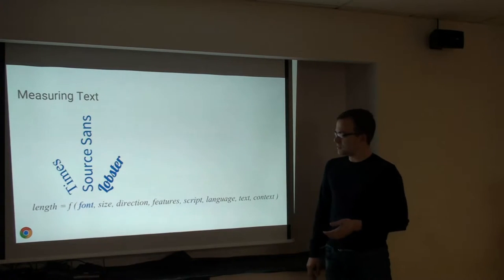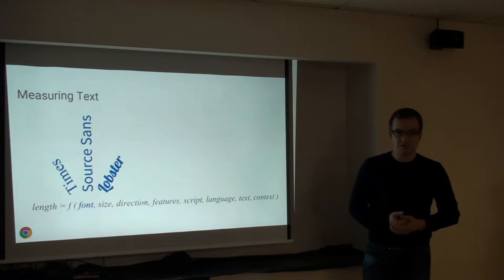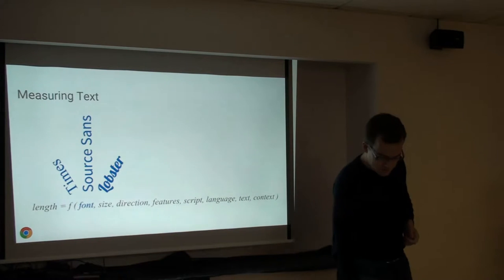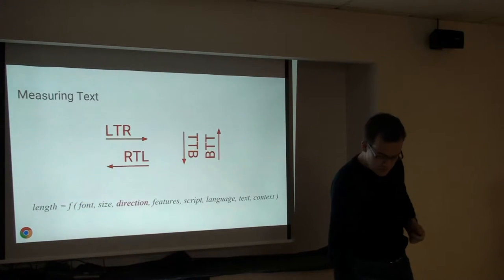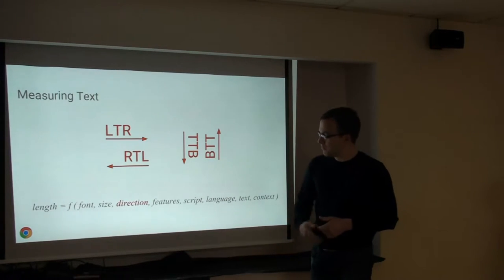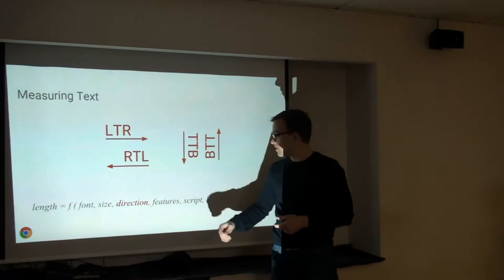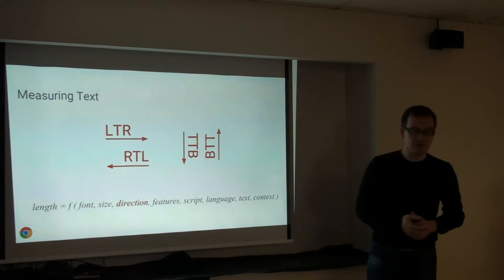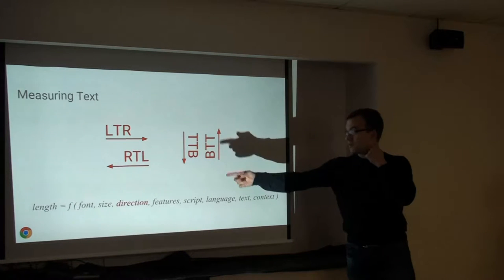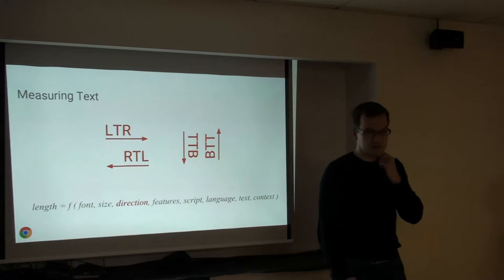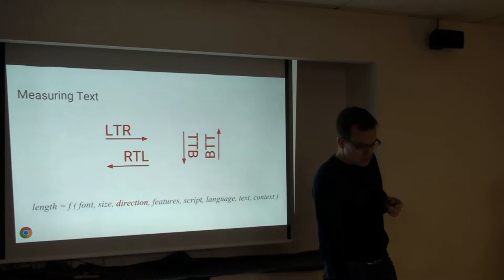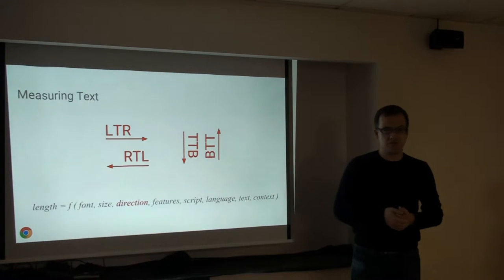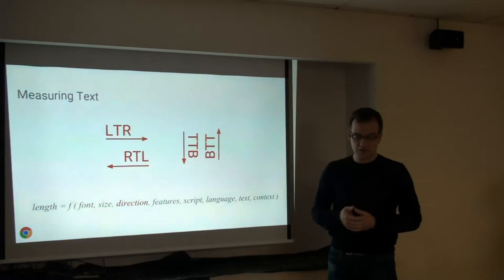The font can be something like Times, Source Sans, or Lobster — a fairly familiar concept. The size of the font is also relatively straightforward. Then direction: language is written left to right, right to left, or top to bottom. Bottom to top exists just for completeness — I don't think any language practically uses that. Top to bottom, however, is common, for example in Japanese typesetting. Letter spacing in vertical layout is different than in horizontal layout, and so is where you draw the actual glyphs.